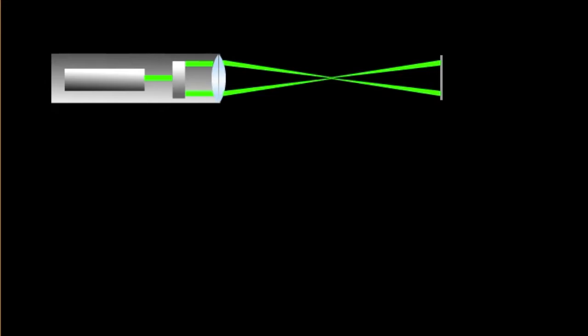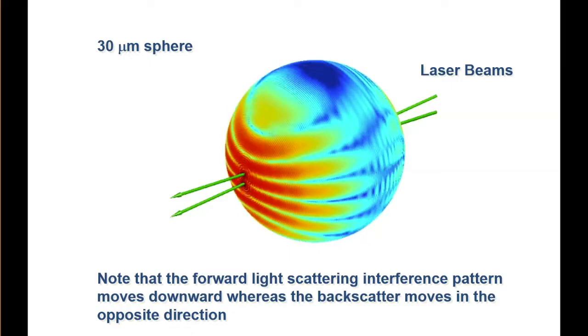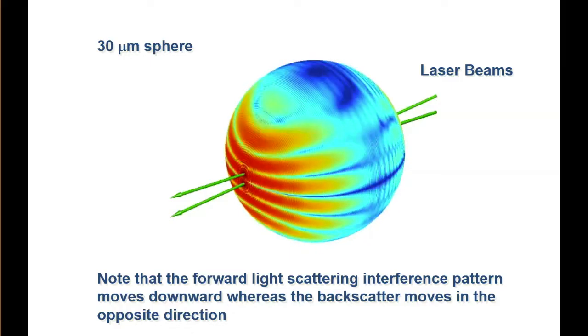Here's the laser head. We have an optical component that splits the laser into two beams. And then we use front lens to cross those beams and the point of crossing is where the measurements take place.